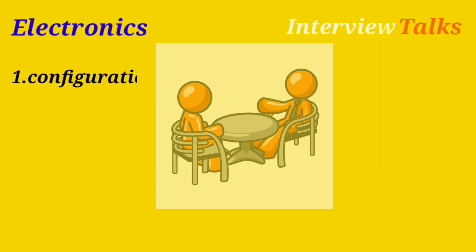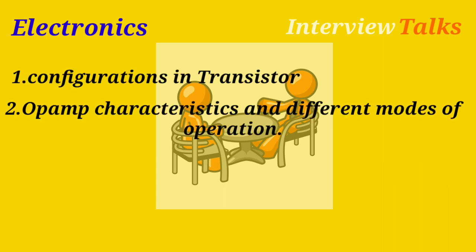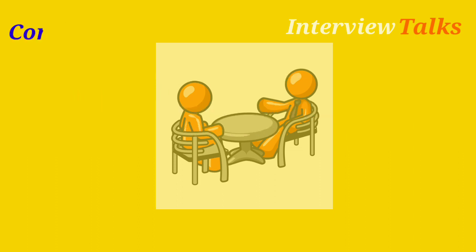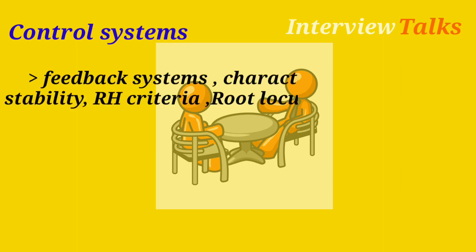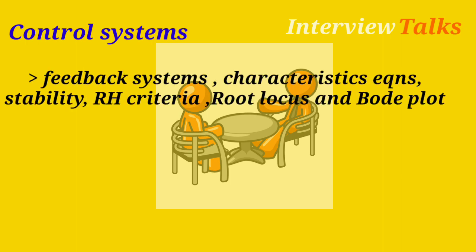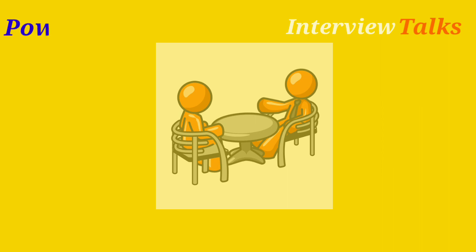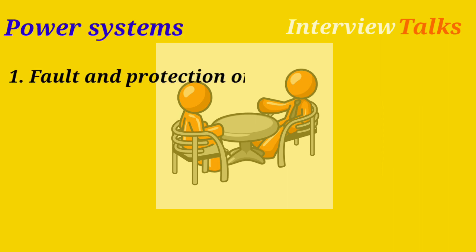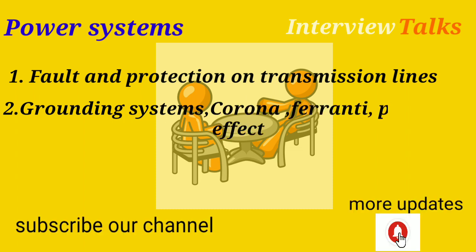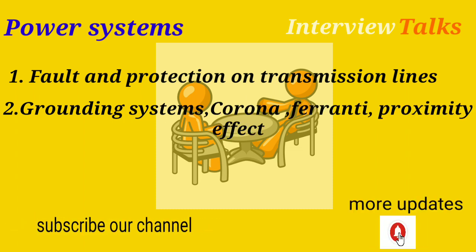Electrical students should also learn some basics in electronics, like different configurations of transistors, op-amp characteristics, and different modes of operation. In Control Systems, check feedback systems, characteristic equations, stability, Routh-Hurwitz criteria, root locus, and Bode plots. For Power Systems, study power transmission lines, grounding systems, Corona, Proximity, and Ferranti Effect.